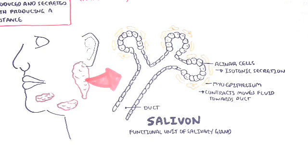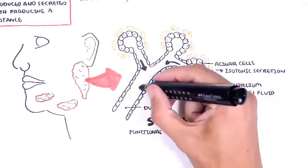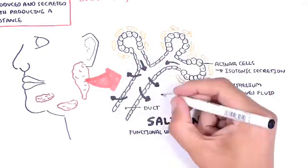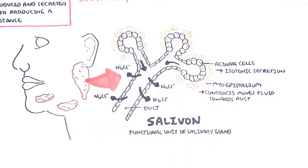Here along the duct, the fluid flows and these duct cells will reabsorb sodium chloride, but it will not reabsorb the water, making the saliva more hypotonic.